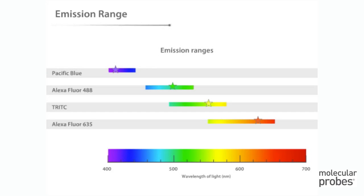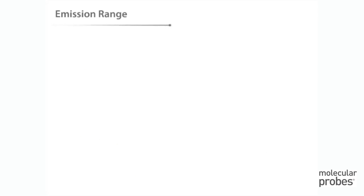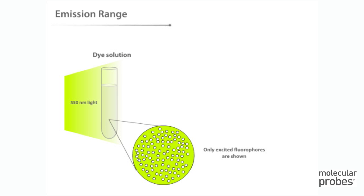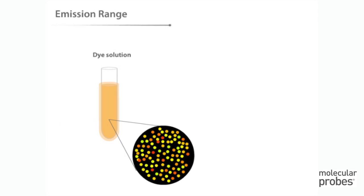Now let's look at the light that is emitted by the fluorophore molecules when they are excited at the optimal excitation wavelength. Just as fluorophore molecules absorb a range of wavelengths, they also emit a range of wavelengths. There is a spectrum of energy changes associated with these emission events. When we excite the previously described dye solution at its excitation maximum, 550 nanometers, light is emitted over a range of wavelengths.